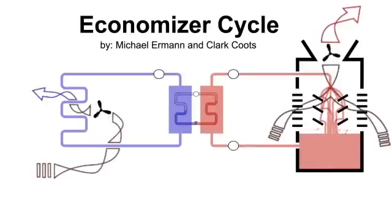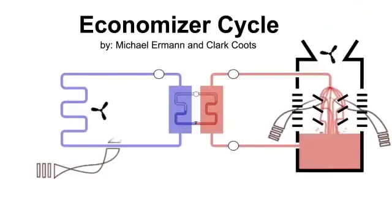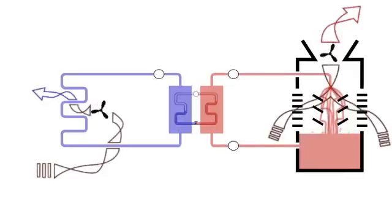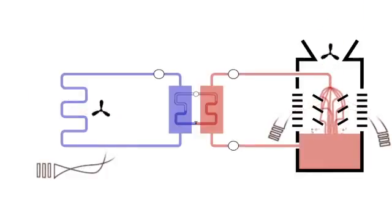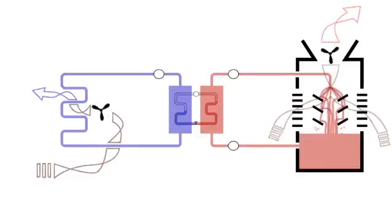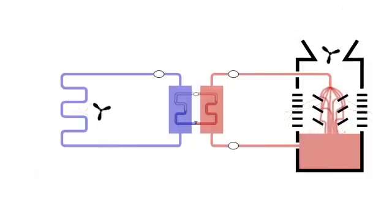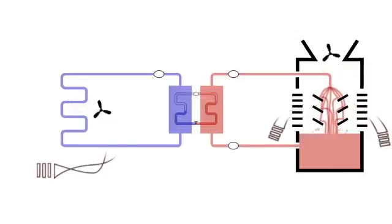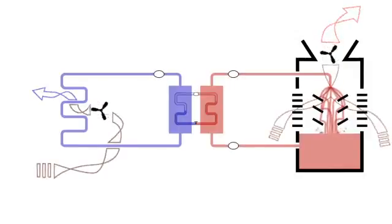Economizer cycle. Buildings, especially in the interior of large structures, often require mechanical cooling even on very cold nights. This is because the heat generated inside the building by people, lighting, and equipment will offset some of the heat losses through the building envelope. In this kind of cold weather, you may be able to cool your building using the cold air outside instead of using traditional air conditioning.